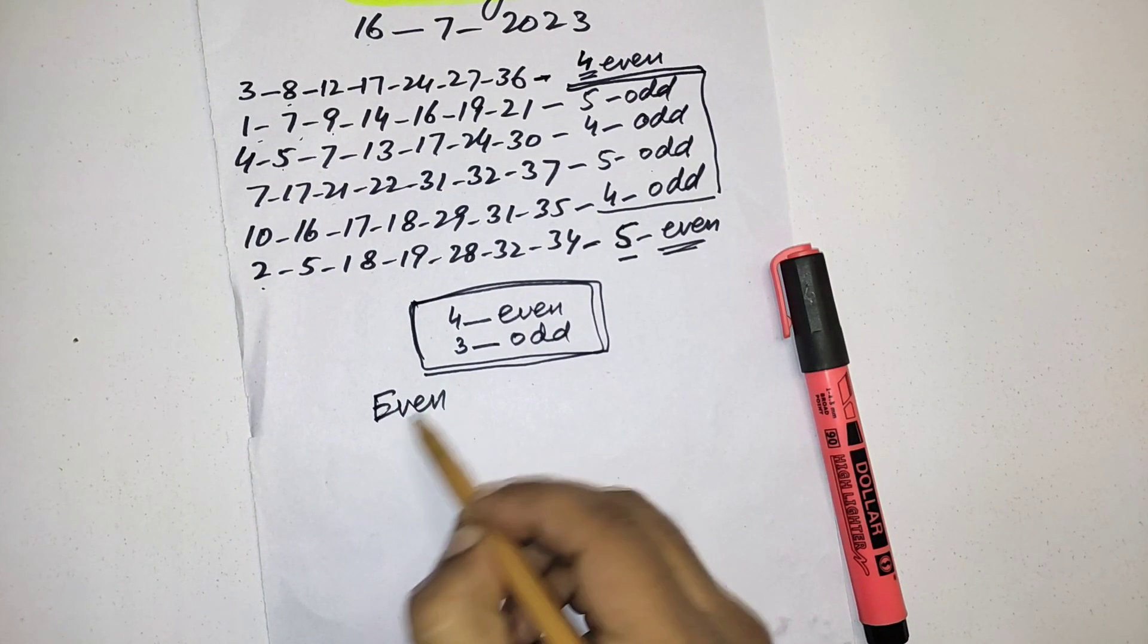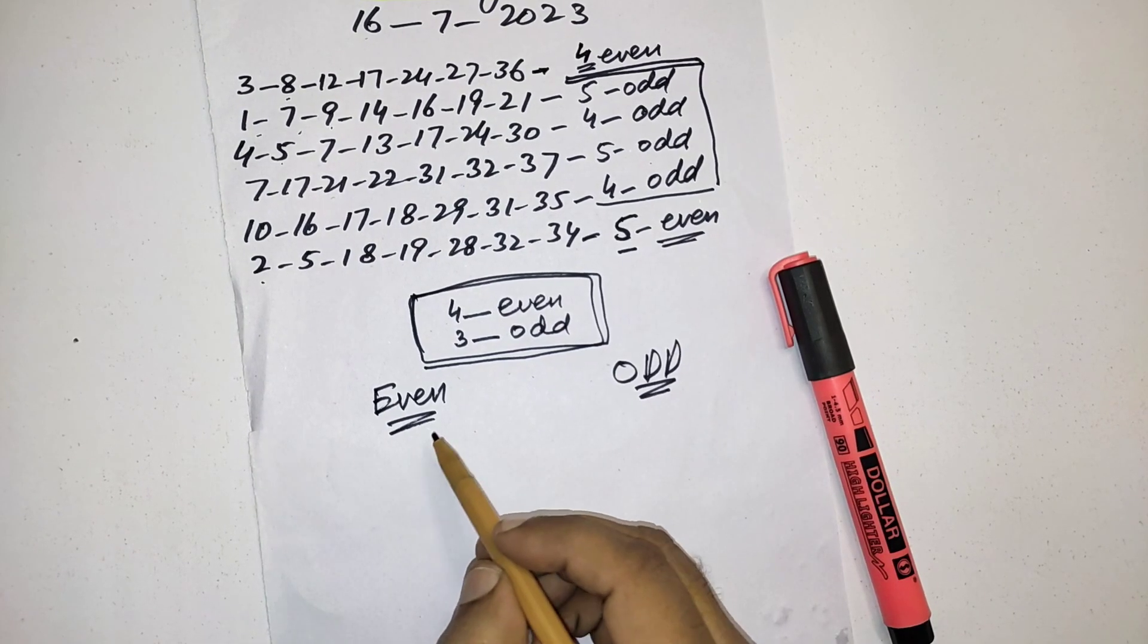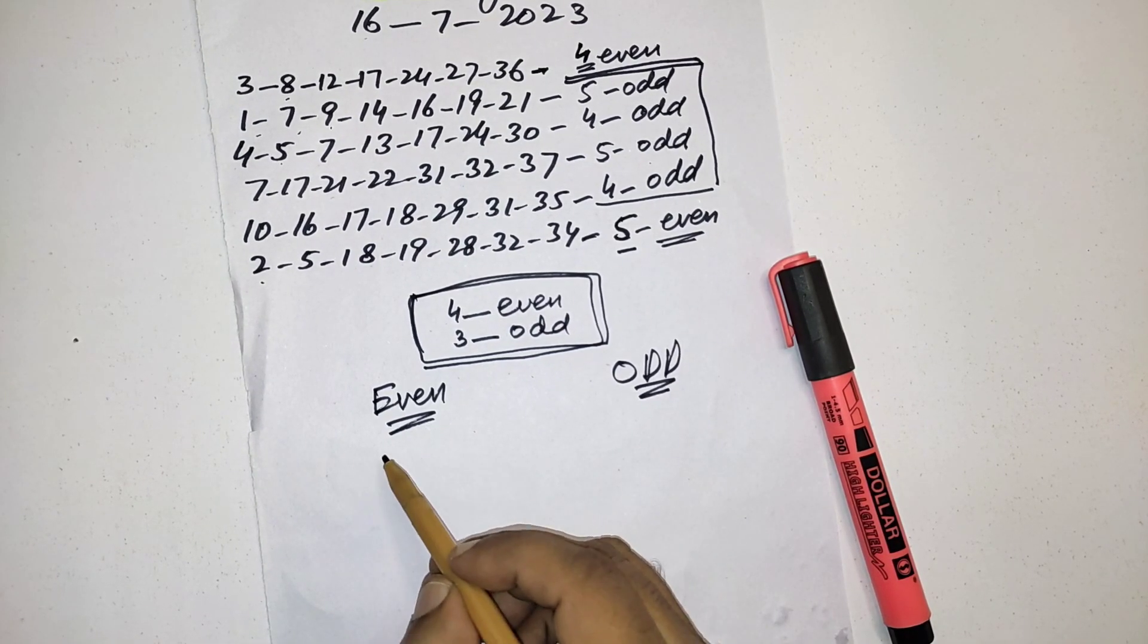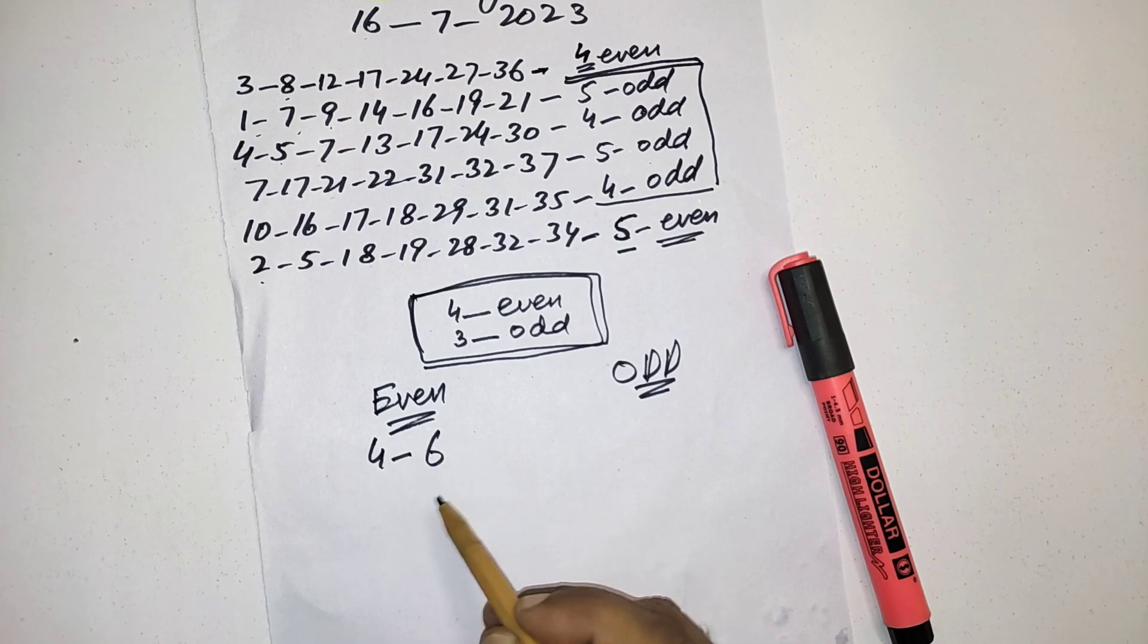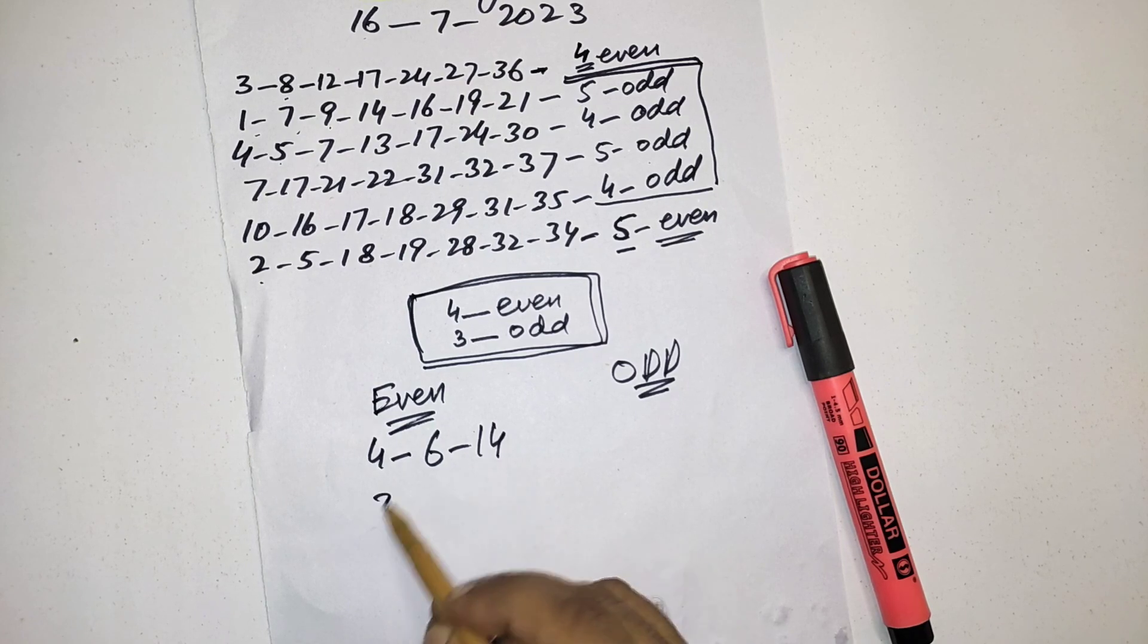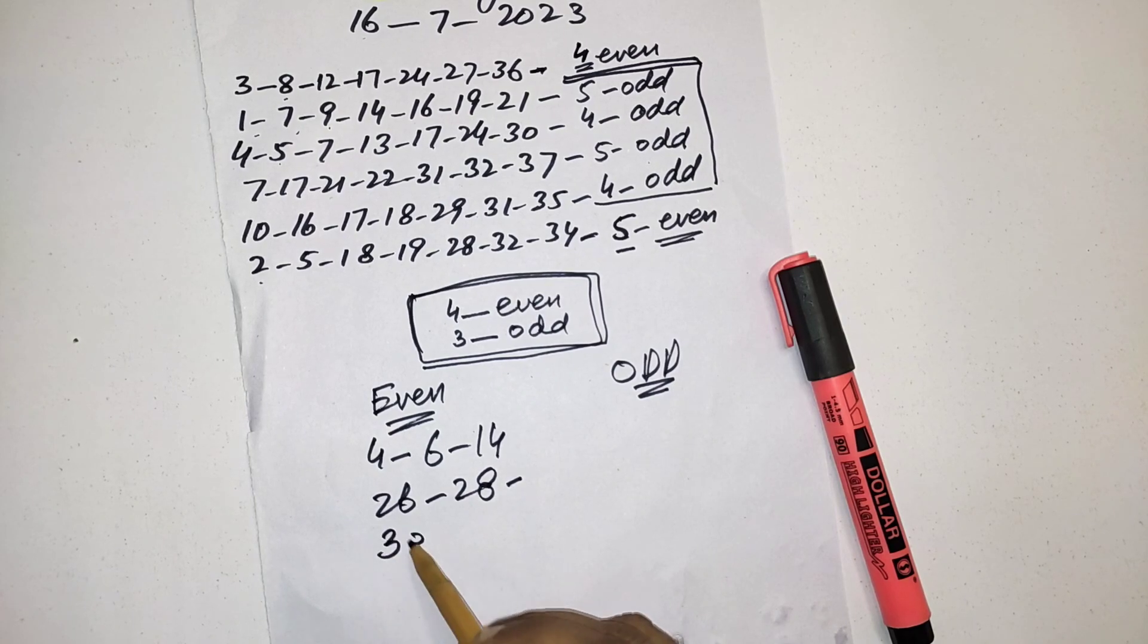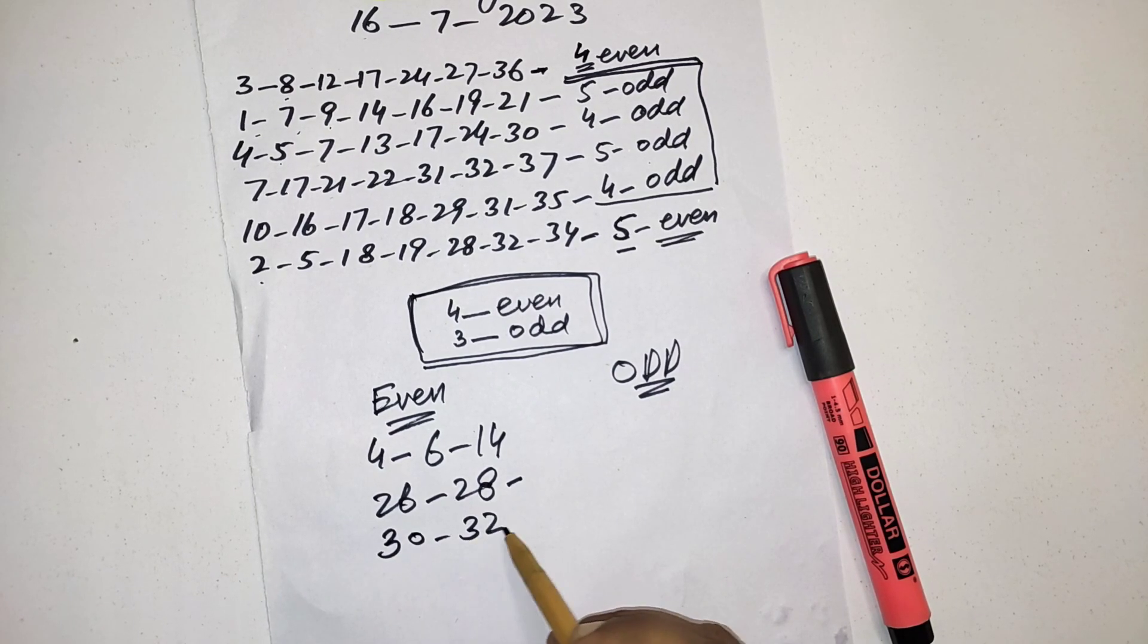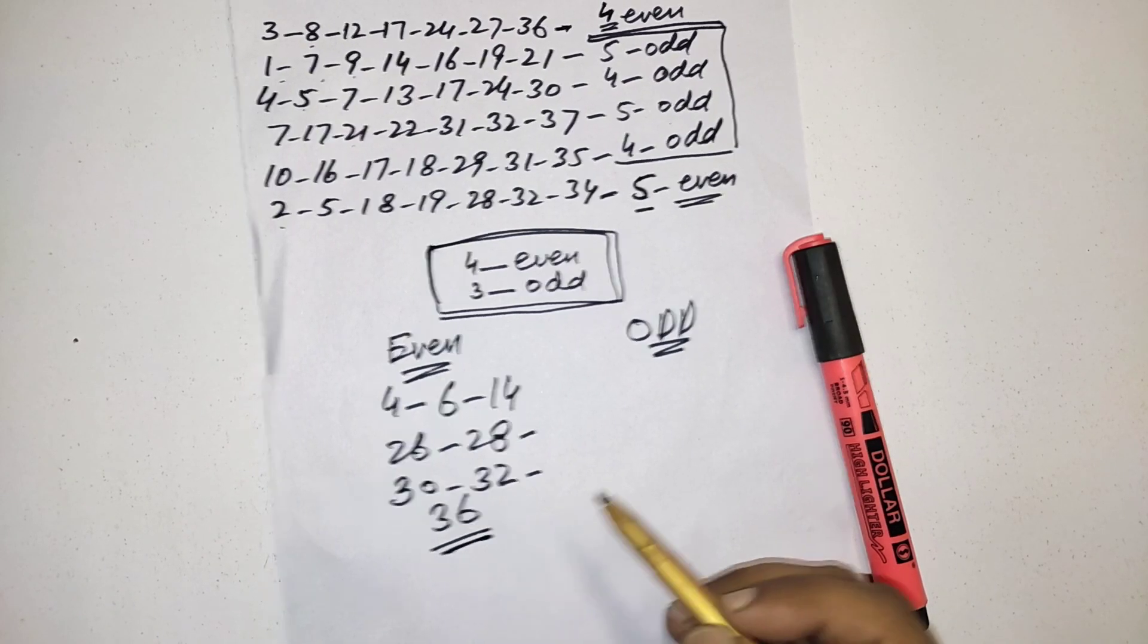First of all, in even I have numbers 4, 6, 14, 26, 28, 30, 32, and 36. And from odd...